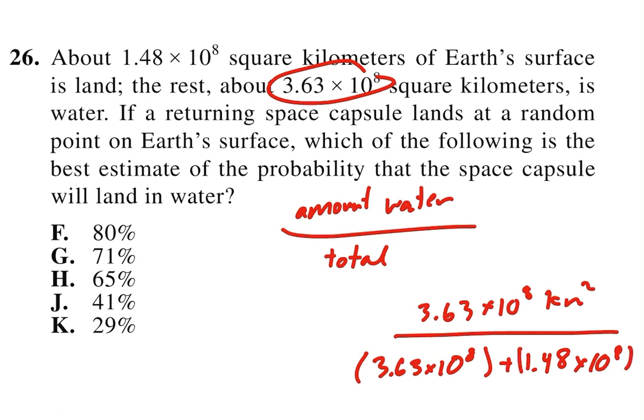And so we can factor this out and divide both the numerator and denominator by 10 to the eighth. So you get 3.63 over 3.63 plus 1.48.